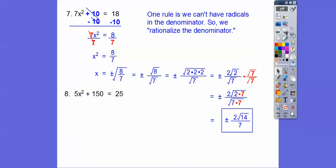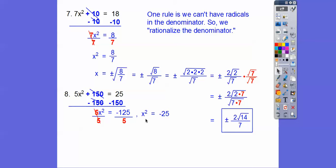Subtract 150 from both sides and divide by 5, and we get x squared equals negative 25. I will never be able to square a number and get negative 25 — squaring any number, positive or negative, always gives a positive result. So when you have a variable squared equals a negative number, you just say no solution. Later on we'll talk about imaginary numbers, but for now there's no real solution.